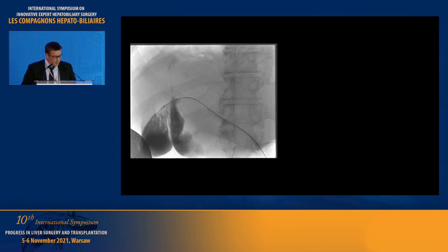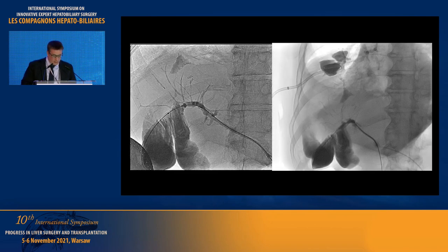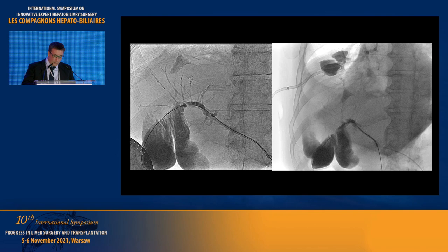So this is the imaging sequence. This is not the first opacification, but there was no stricture on the biliary anastomosis. As you can see, on the right side the picture shows an ascending transdiaphragmatic pathway with communication with the pulmonary abscess.